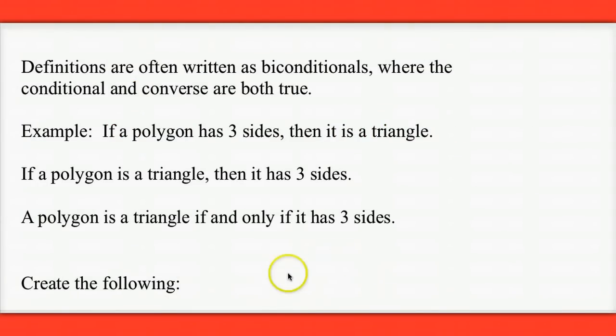Here we have something called a biconditional. A biconditional occurs when both the original statement or the original conditional and the converse are both true. And this is often the case with definitions. For example, we know if a polygon has three sides, then it's a triangle. We could also say if a polygon is a triangle, then we know it has three sides. It's basically part of the definition of a triangle.